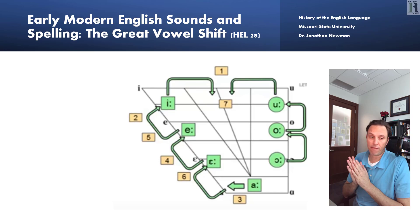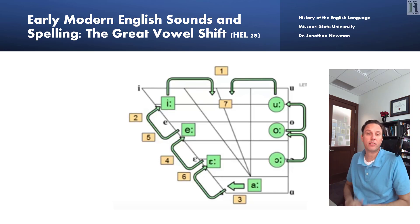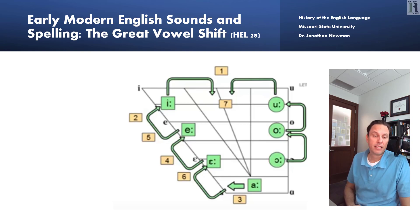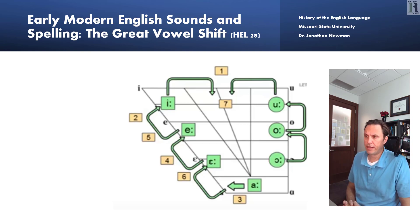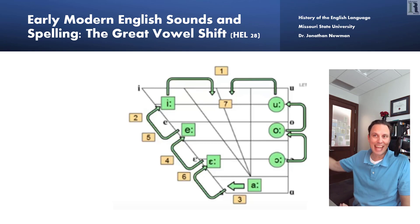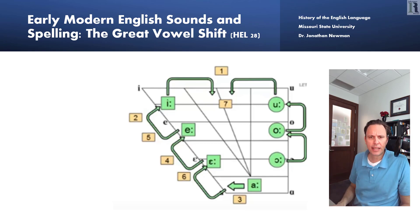The Great Vowel Shift begins around 1400 and is more or less complete by 1550 in standard English — that is, in southeastern England. Some of the changes have not taken place completely in Scotland, in parts of northern England, and even the characteristic Canadian 'about' indicates a vowel that has shifted less in Canadian, through the influence of Scots English, than in other dialects. Let's take a closer look.